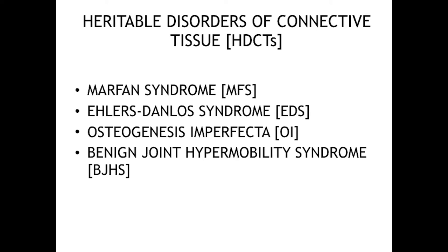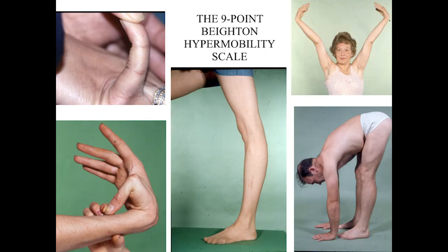The heritable disorder of connective tissue is basically a family of disorders described over the last 120 years: Marfan syndrome, Ehlers-Danlos syndrome in its various forms. And there is, since 1967, the curious entity which rheumatologists refer to as the joint hypermobility syndrome. It took a long time for the penny to drop that the joint hypermobility syndrome and the hypermobile form of EDS are almost certainly one and the same.